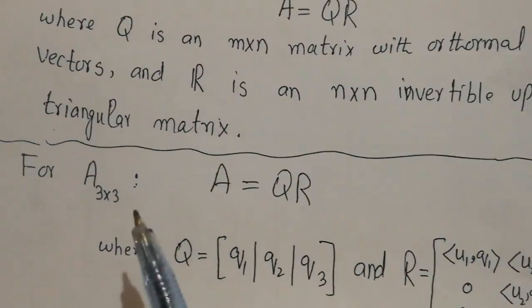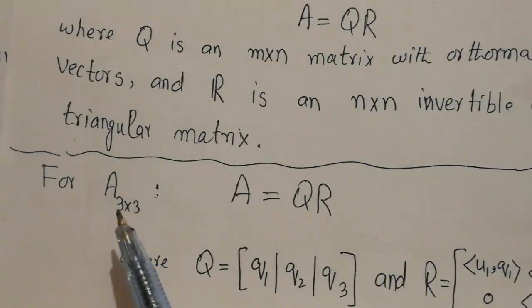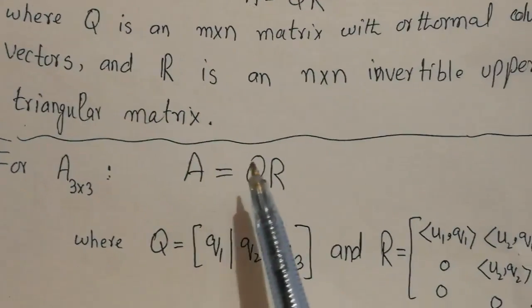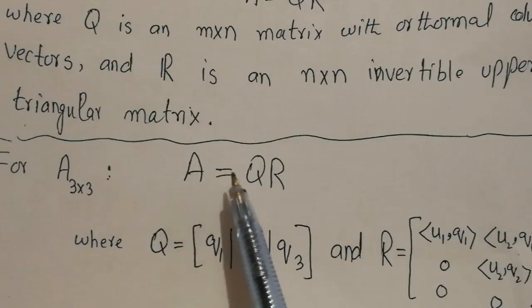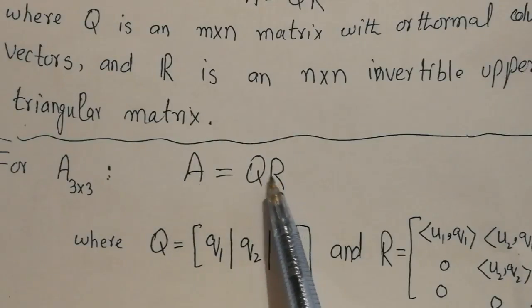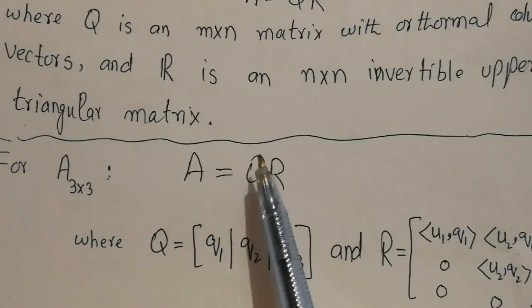Let us consider an example to understand the process. If we have a 3×3 matrix A, then the product QR equals A. We need to find Q and R, and that process is called QR factorization.